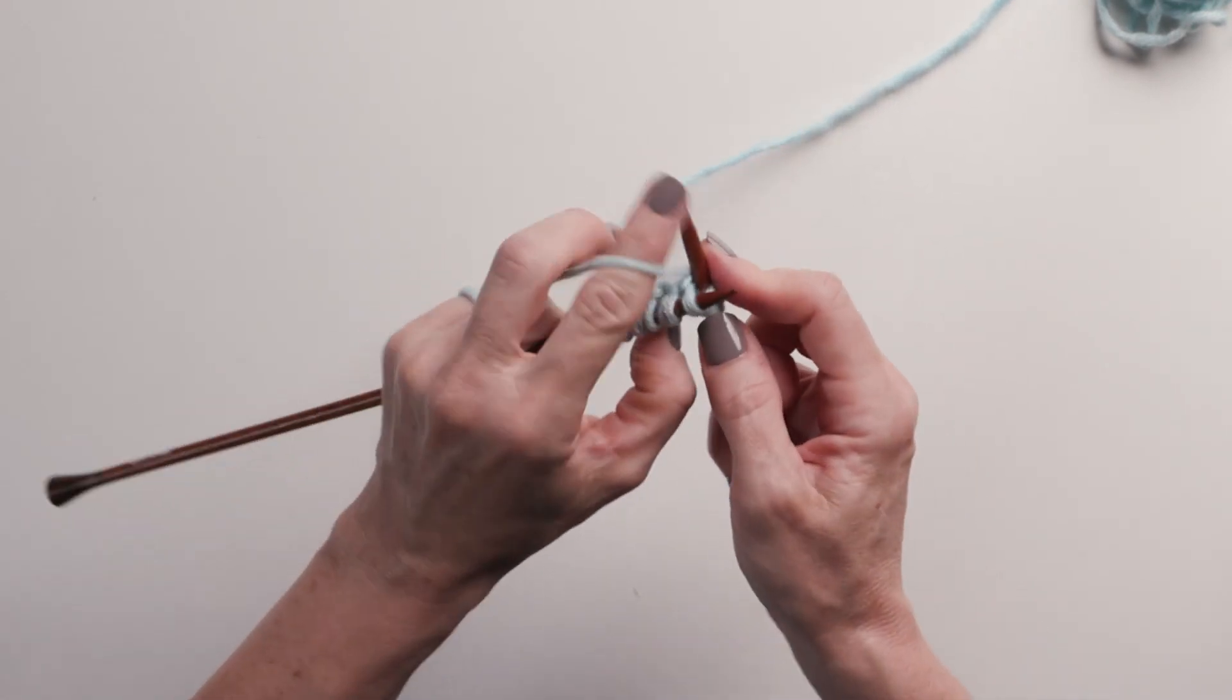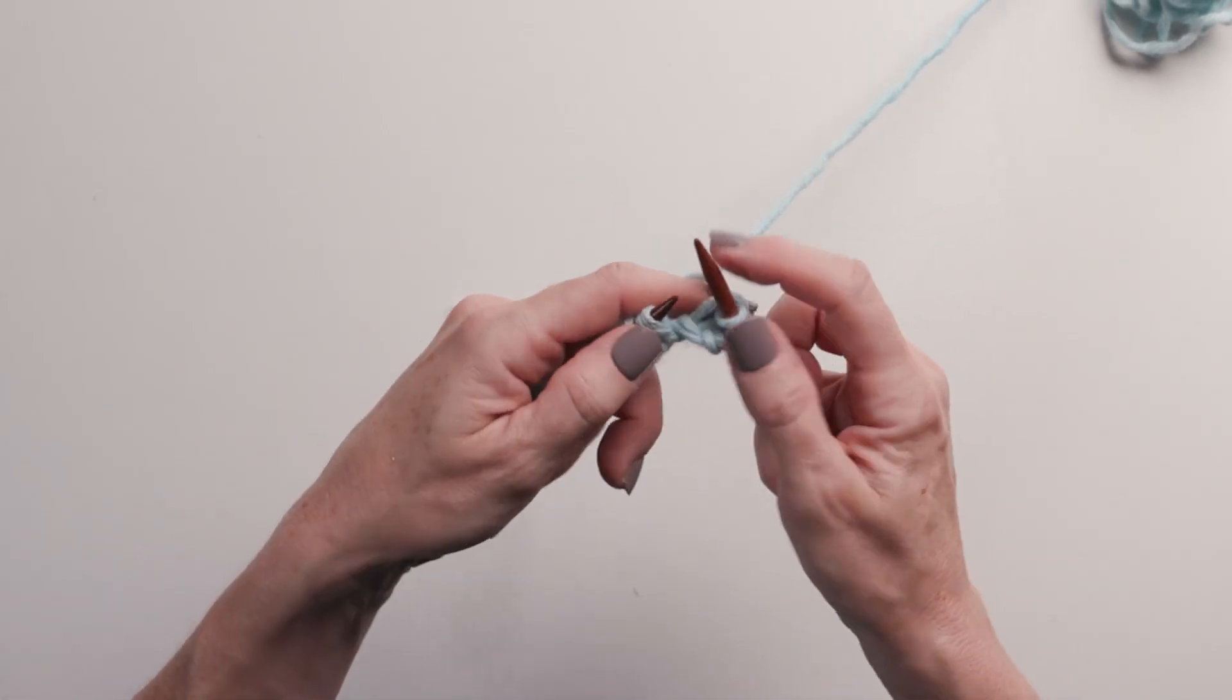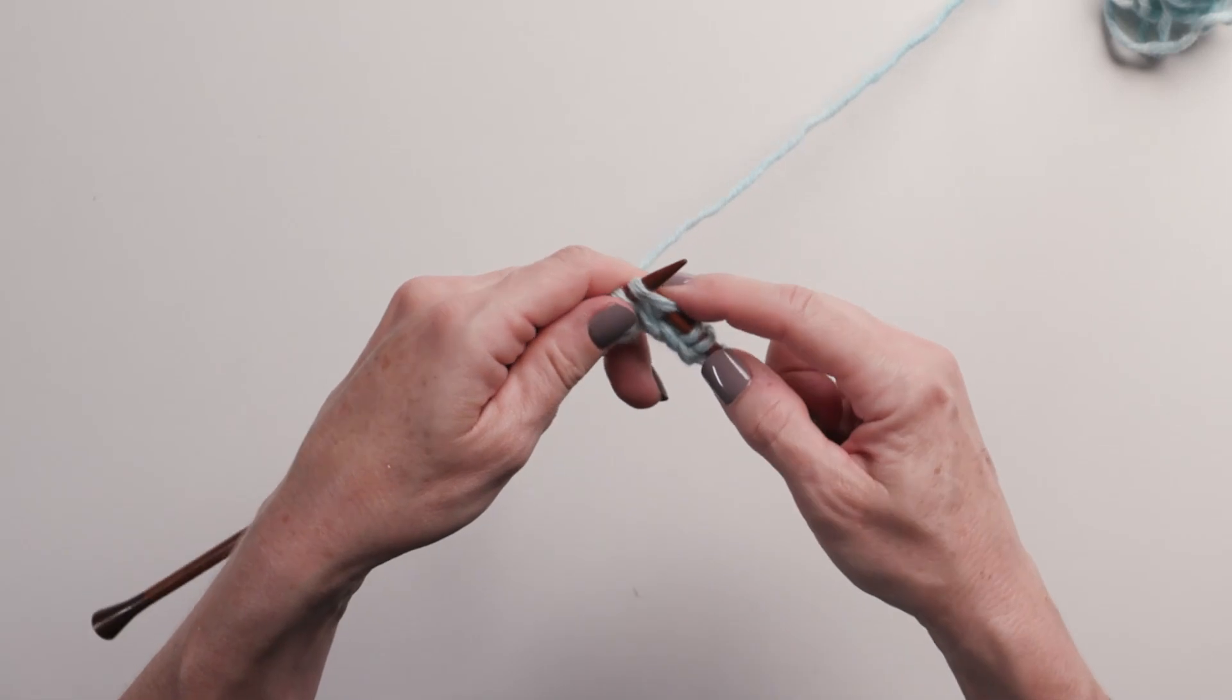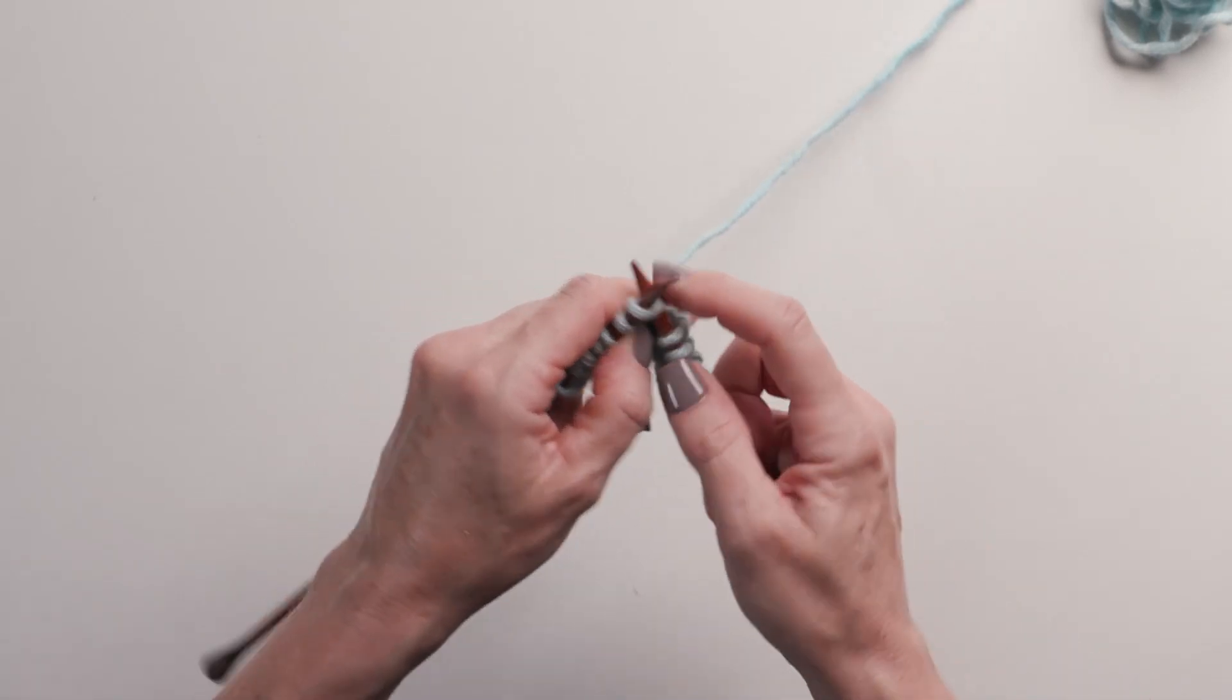So now I am just knitting the stitches that I've just cast on. And I'm going to show you what that looks like when I get to the end of the row.